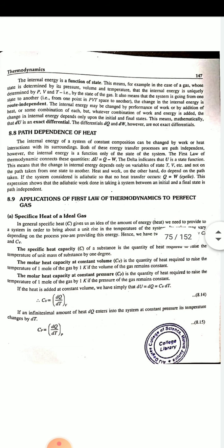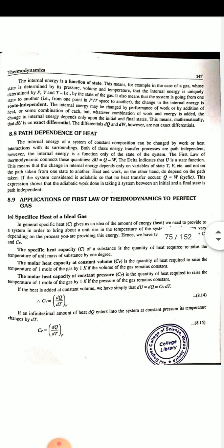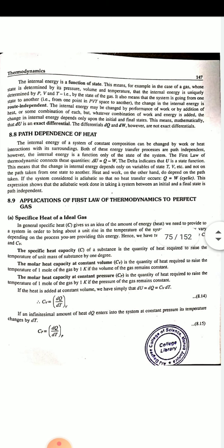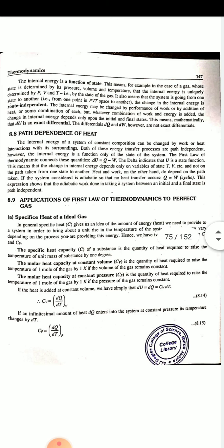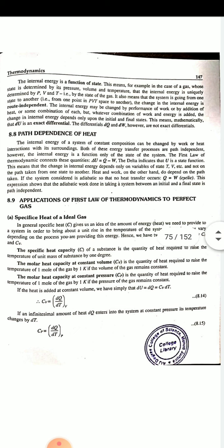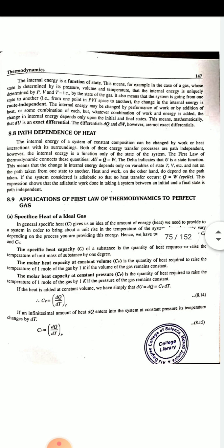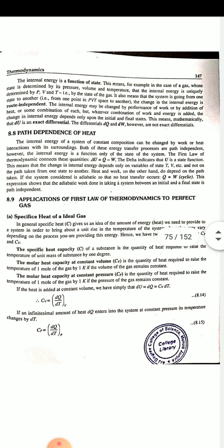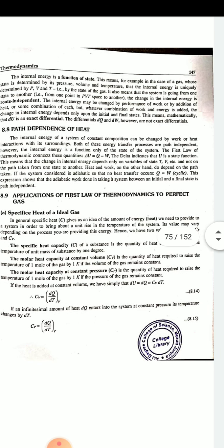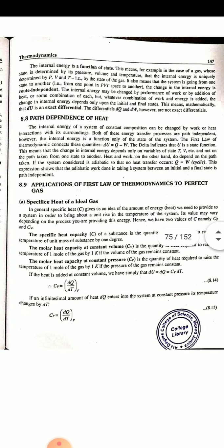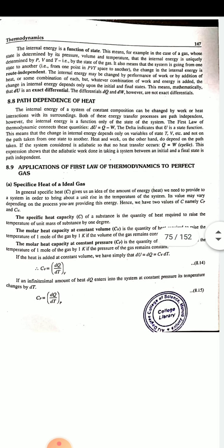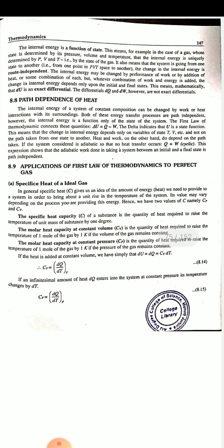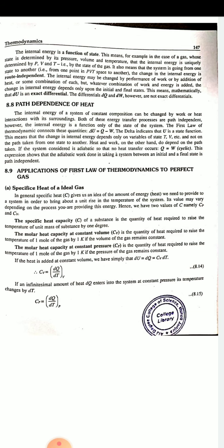This means that the change in internal energy depends only on the variables of state — T, V, etc. — and not on the path taken from one state to another. Heat and work, on the other hand, do depend on the path taken. If the system considered is adiabatic so that no heat transfer occurs, Q = W. This expression shows that adiabatic work is path dependent. The first law of thermodynamics is essentially the law of conservation of energy — the total energy is conserved.